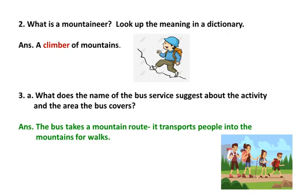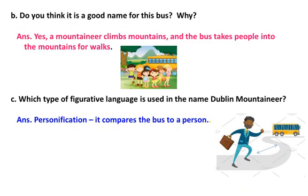Children, when you read the answer, look at the pictures given to understand the concept better. Read question B: Do you think it is a good name for this bus? Why? Answer: Yes, a Mounir climbs mountains, and the bus takes people into the mountains for walks. Which type of figurative language is used in the name Dublin Mounir? All of you know the answer — personification.